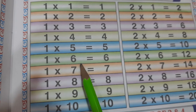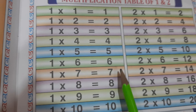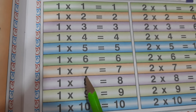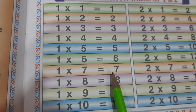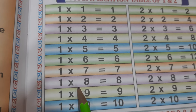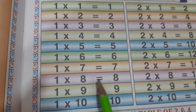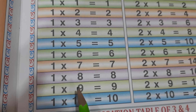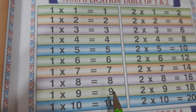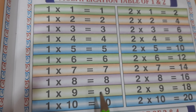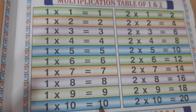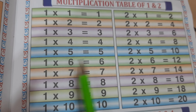1 6s are 6. 1 7s are 7. 1 8s are 8. 1 9s are 9. 1 10s are 10.